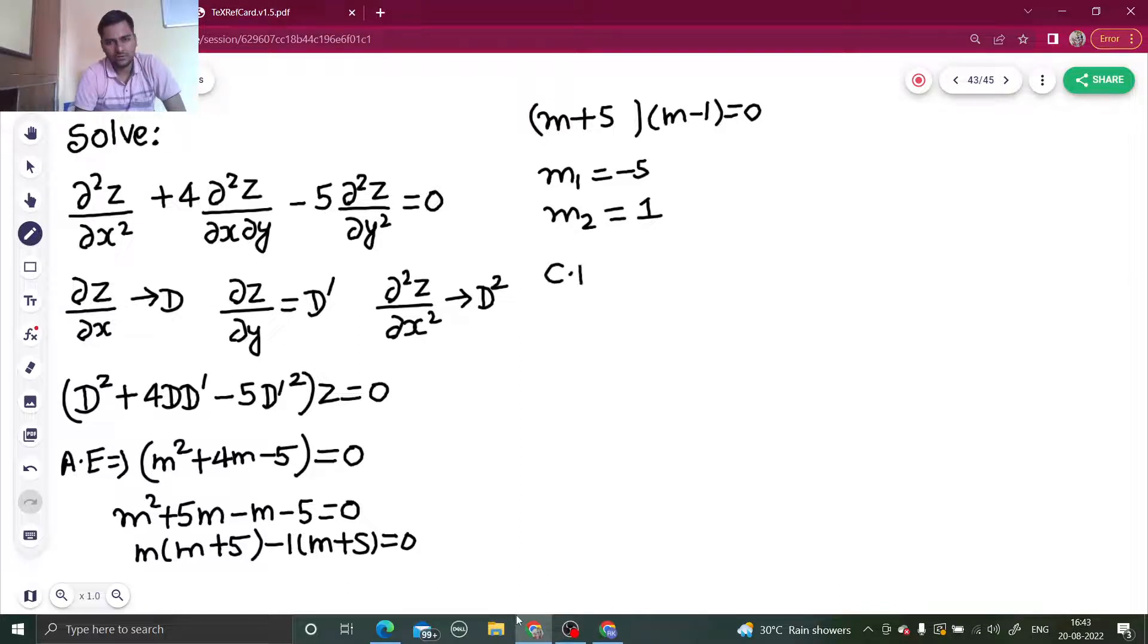Coming to your complementary function, how to write that? Because they are real and distinct, so f₁(y + m₁x), so y - 5x, plus f₂(y + m₂x), which is y + x. Particular integral is 0 in this case because your RHS is 0.